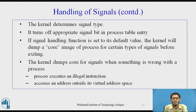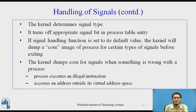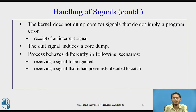The kernel determines the signal type and turns off the appropriate signal bit in the process table entry. If the signal handling function is set to default, the kernel will dump a core image for certain signals before exiting — specifically when something is wrong, like an illegal instruction or access outside the virtual address space. The kernel does not dump core for signals that do not imply a program error, such as an interrupt signal. The quit signal induces a core dump. If a process receives a signal it ignores, it behaves as if nothing happened; if it receives a signal it previously decided to catch, it calls the user function for handling the signal.